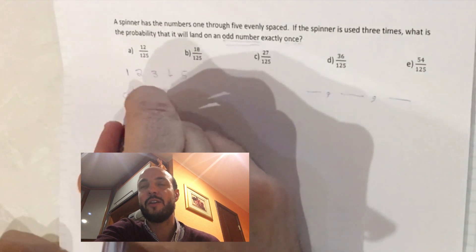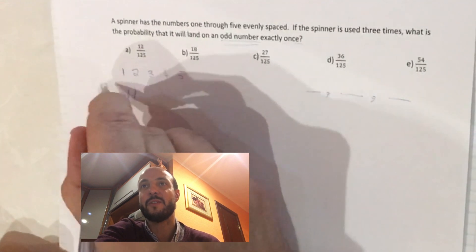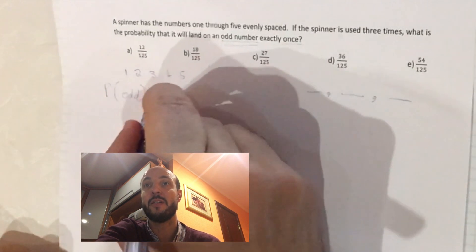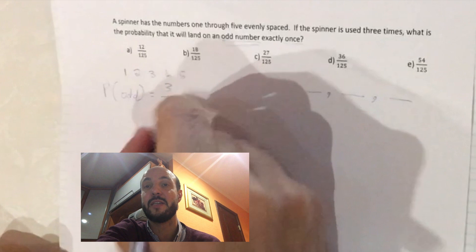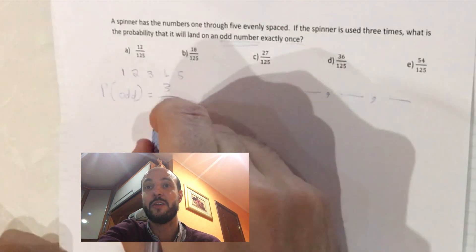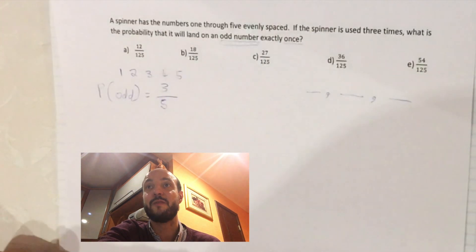So how many odd numbers have we got out of our 5 numbers? What's the probability of getting an odd? Well it could be 1, 3, or 5, so there's 3 possible odd numbers out of how many numbers in total: 1, 2, 3, 4, 5. So the probability of getting an odd number is 3 out of 5.